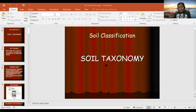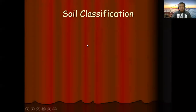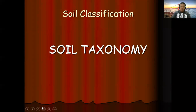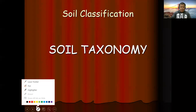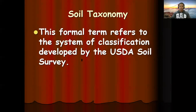When we say soil taxonomy, taxonomy is a science of naming — there are different names of soils under different classifications. Taxonomy as a formal term refers to a system of classification. There must be a system of classification in soil science, and if we have no system, there is no way of classifying soils.